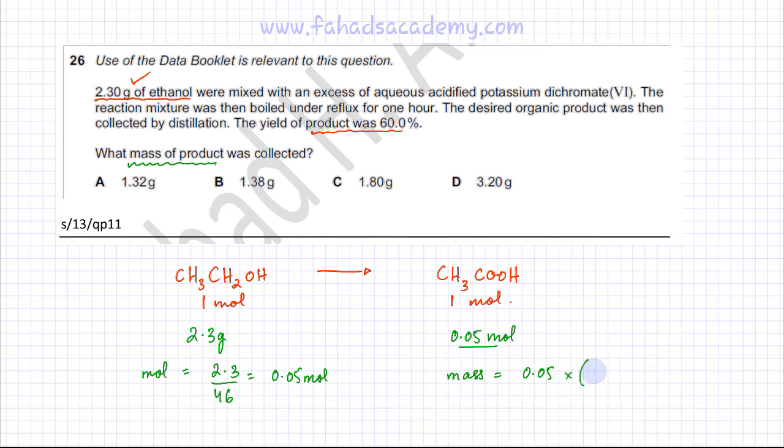Plus there are 2 oxygens, so that's 16 plus 16, which is 32, plus you have 4 hydrogens, so that would be approximately equal to 60. If you multiply this using your calculator, the answer would be equal to 3 grams.